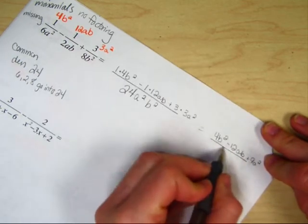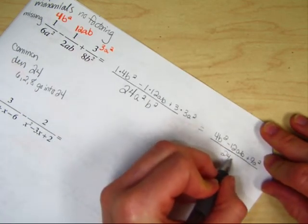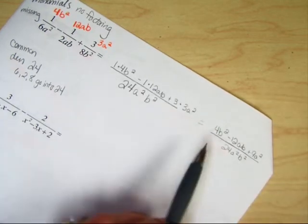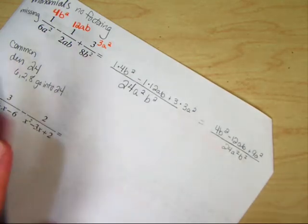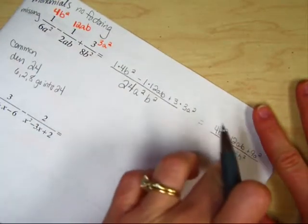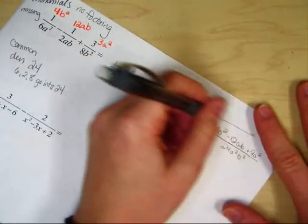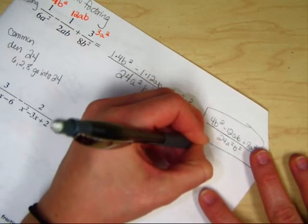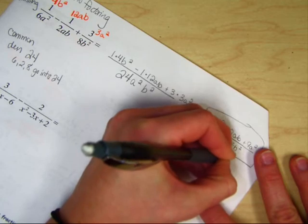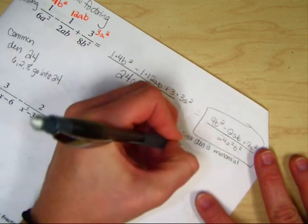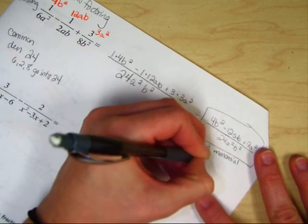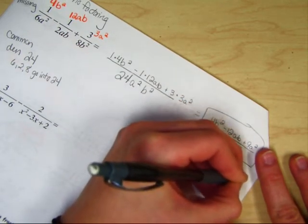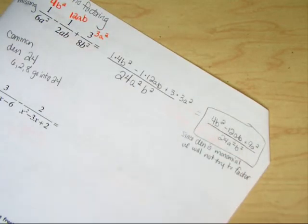That's your new numerator. Denominator, 24a squared b squared. The numerator, we're not even going to bother factoring with it since the bottom is a monomial, we're not going to even bother to factor. Write that down. Since the denominator is a monomial, we will not try to factor. That means that's your final answer.